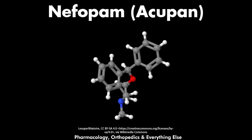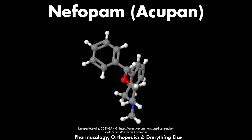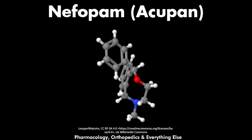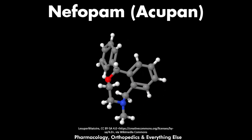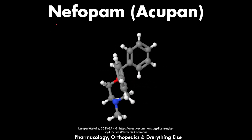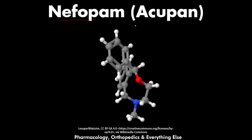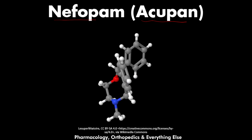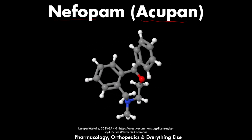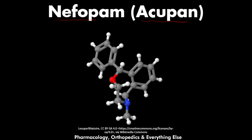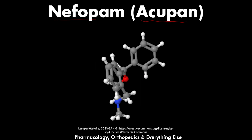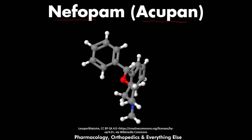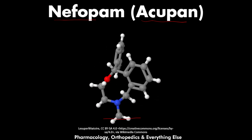Hello and welcome back to the CNS pharmacology masterclass where we discuss all the medications that work on the central nervous system. Here we will talk about another analgesic medication — nefopam, which is also known as Acupan. In this video we will talk about the definition, mechanism of action, therapeutic uses, adverse effects, and contraindications of nefopam. You can always skip to other parts of this video using the video chapters in the video description.